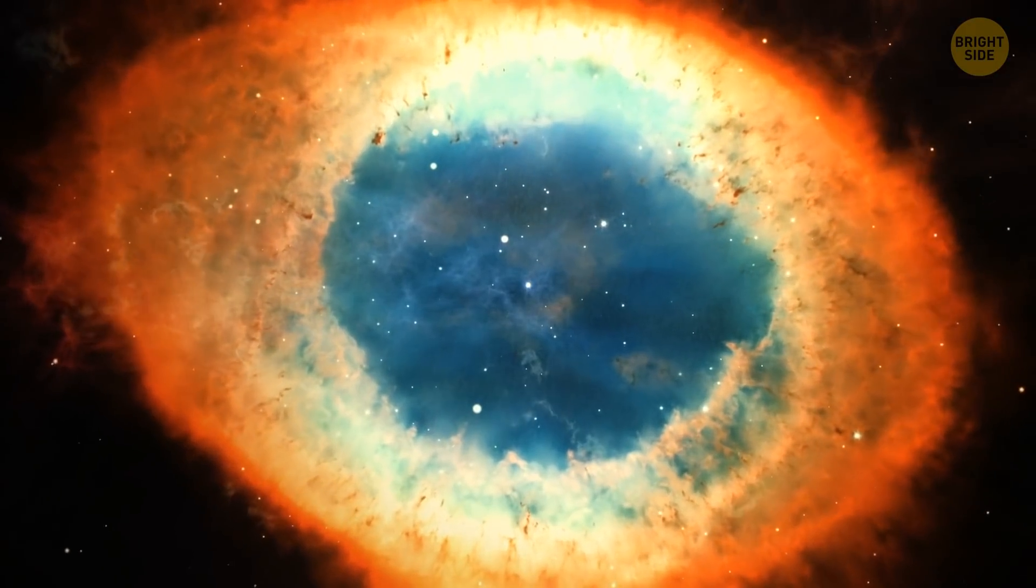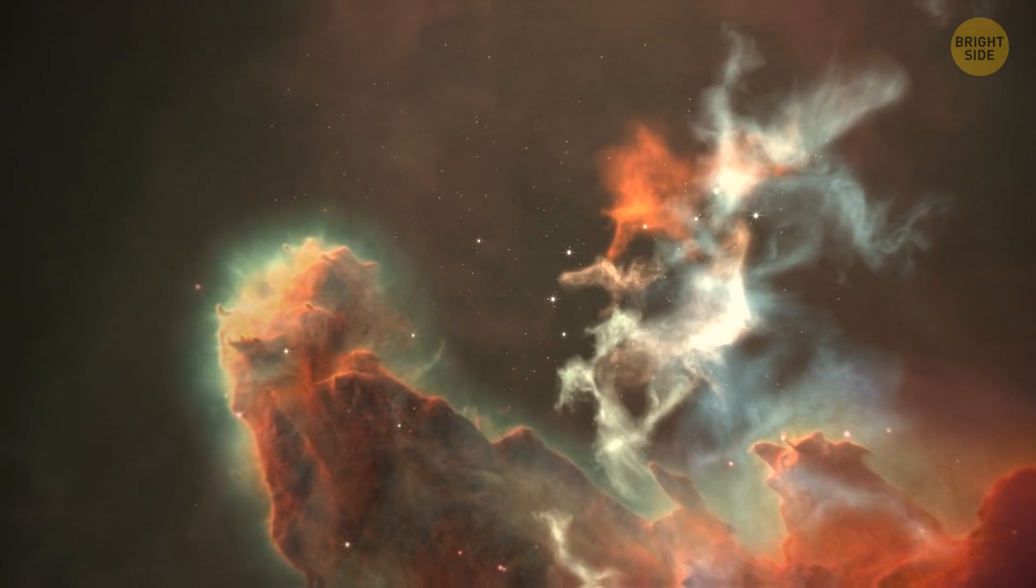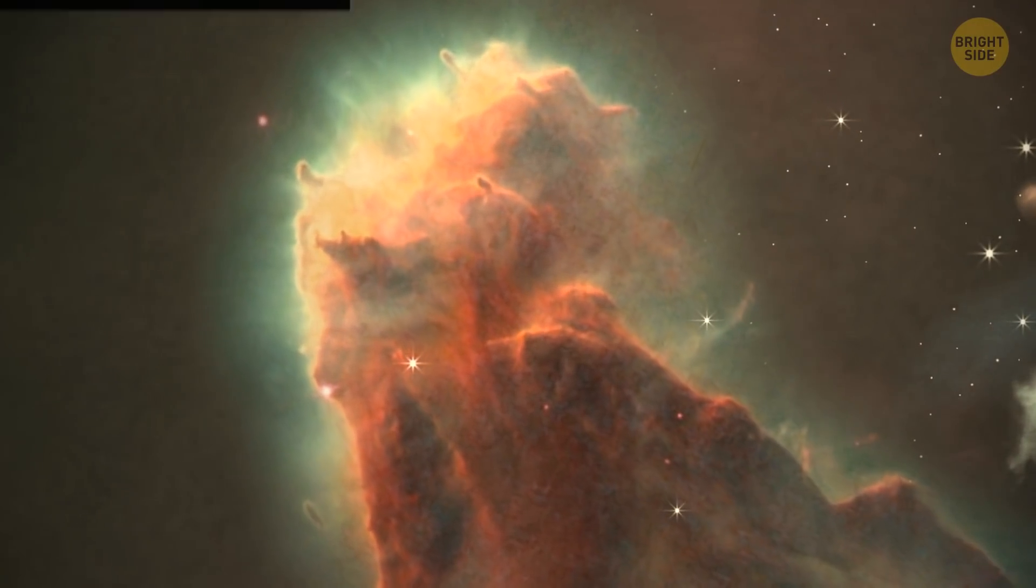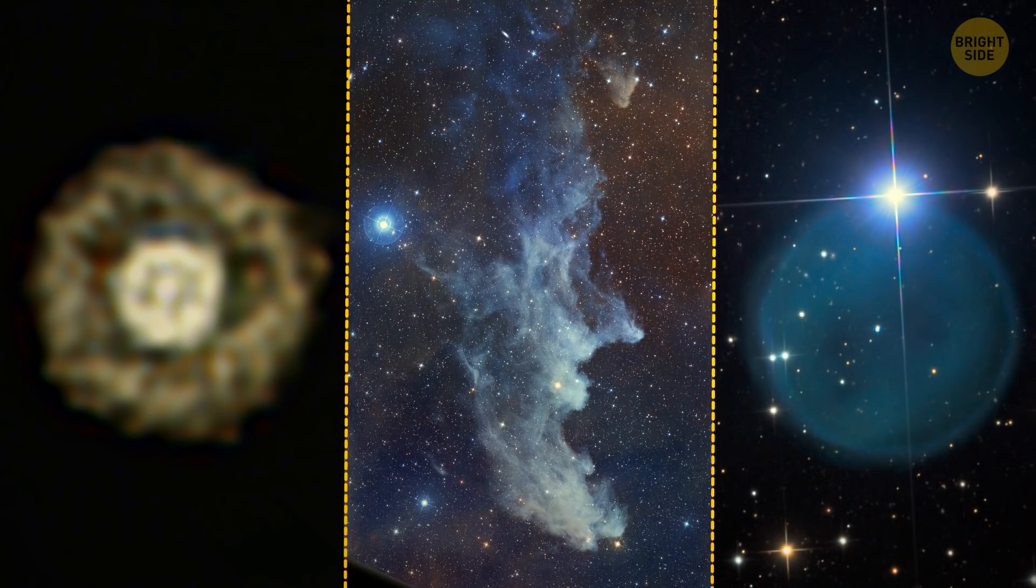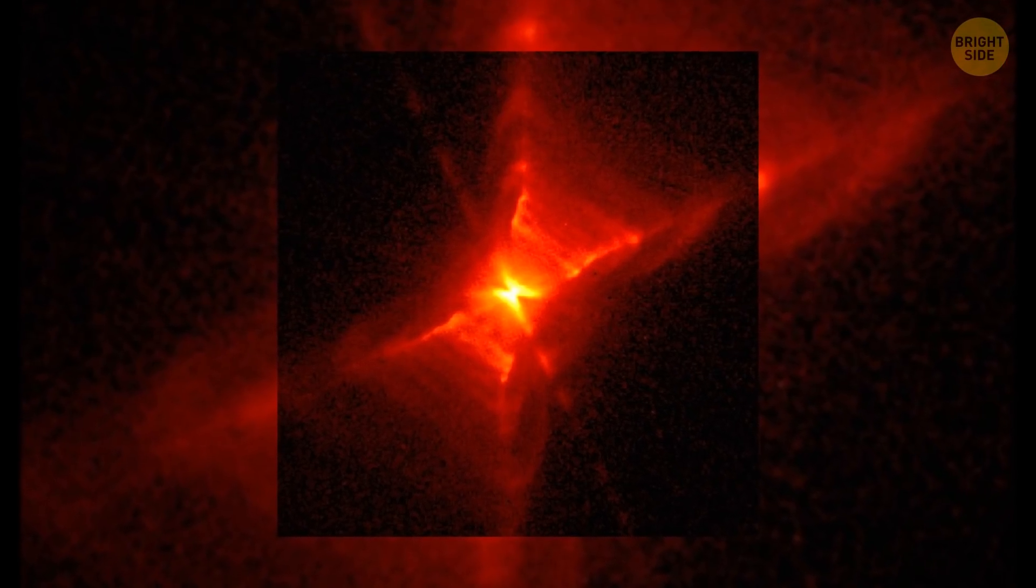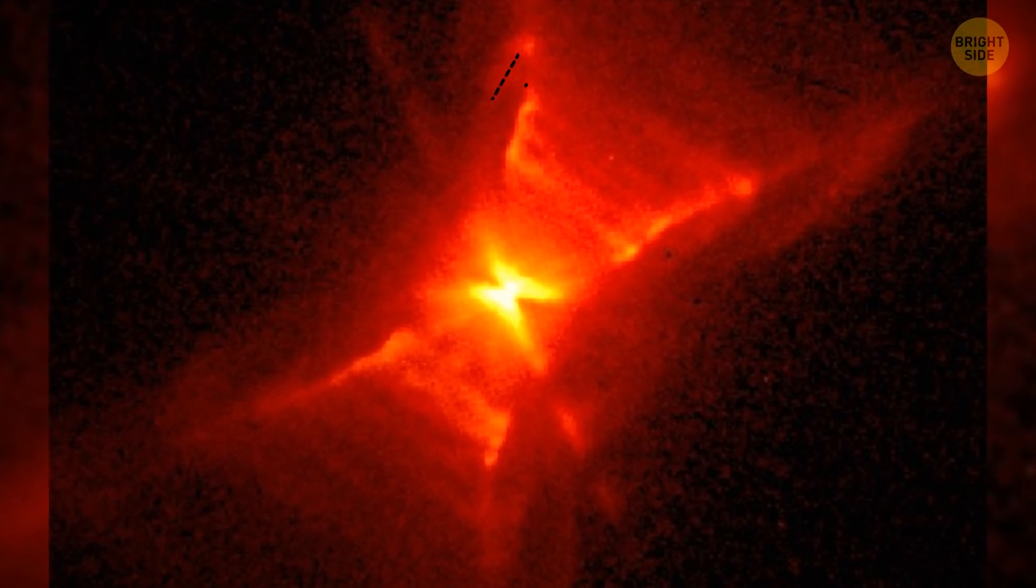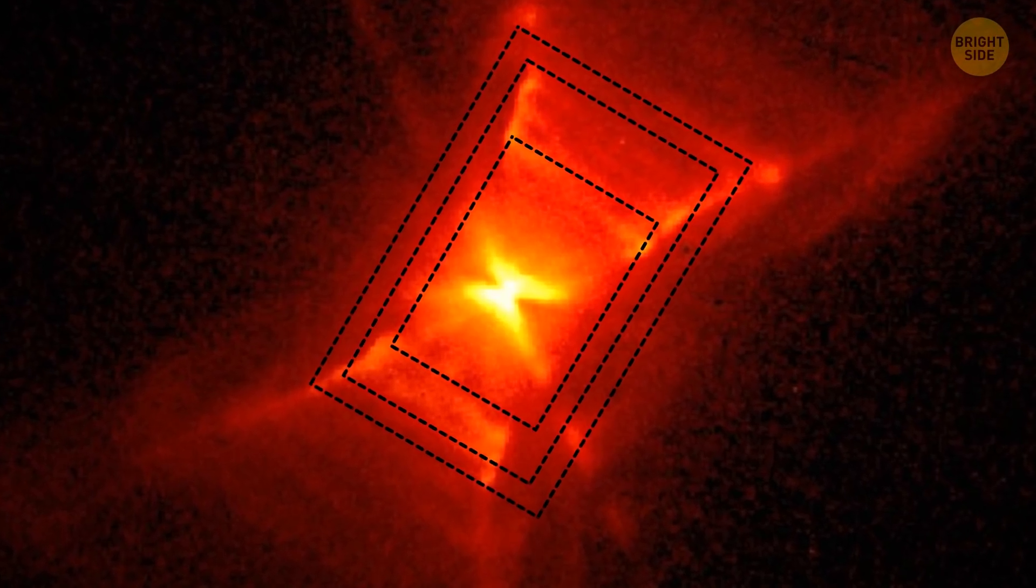Nebulae are huge clouds of dust, gas, and plasma that never stop dishing out surprises. They can change and take almost any shape – a fried egg, a space head, a diamond ring. A red square nebula is one of the most fascinating space objects. There is no explanation of how and where it came from. It's just a glowing and almost perfectly symmetric box in the middle of nowhere.